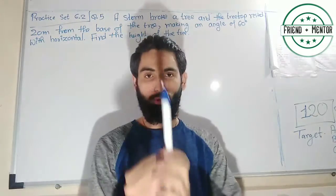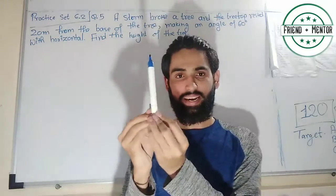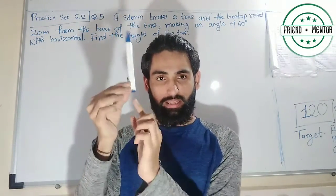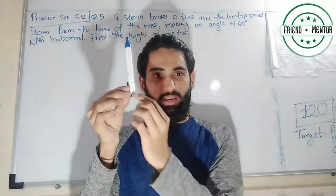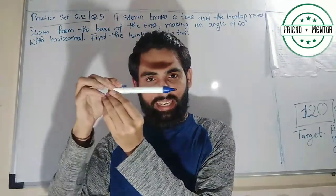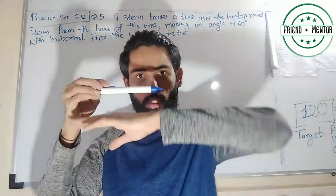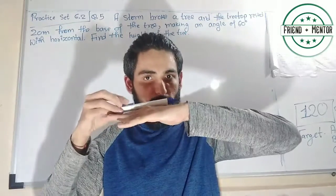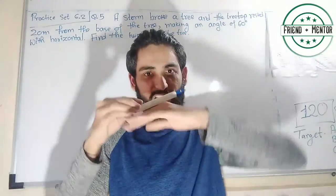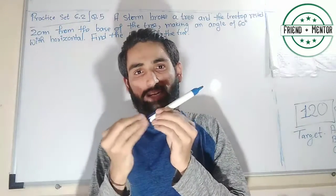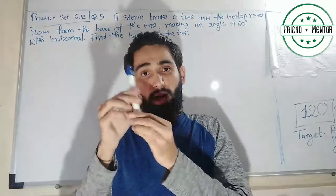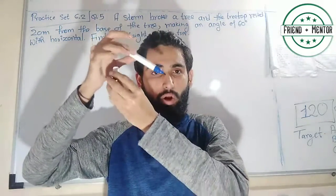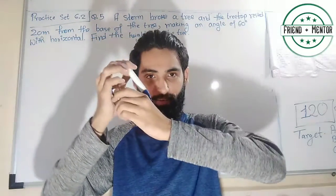A small note: suppose I have a tree — if it falls completely flat, it makes 0 degrees with the horizontal. This means the tree is not breaking from its base; it is breaking somewhere in the middle and then falling like that.